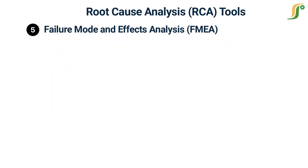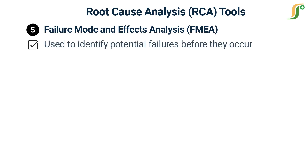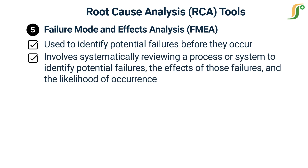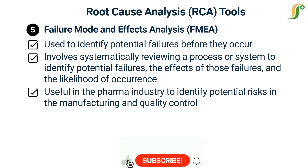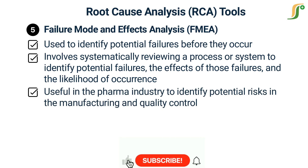Failure Mode and Effects Analysis, or FMEA, is a proactive RCA tool used to identify potential failures before they occur. FMEA involves systematically reviewing a process or system to identify potential failures, the effects of those failures, and the likelihood of occurrence. This tool is particularly useful in the pharma industry to identify potential risks in manufacturing and quality control processes.